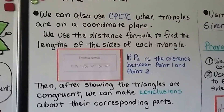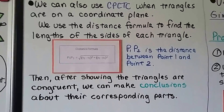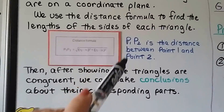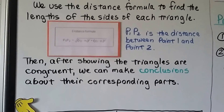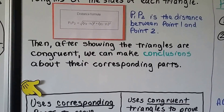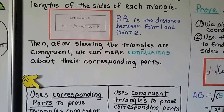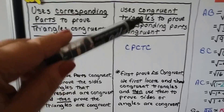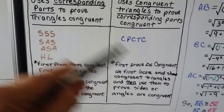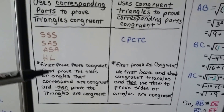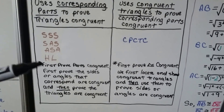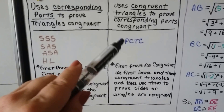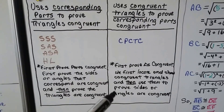We can also use CPCTC when triangles are on a coordinate plane. We use the distance formula to find the lengths of the sides of each triangle. After showing that triangles are congruent, we can make conclusions about their corresponding parts. SSS, SAS, ASA, AAS, and hypotenuse-leg use corresponding parts to prove triangles congruent. CPCTC then uses congruent triangles to prove the corresponding parts are congruent — it's the reverse direction.